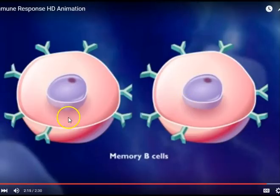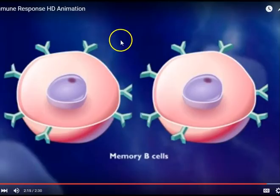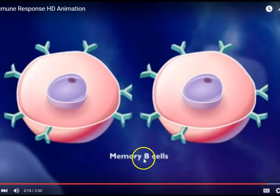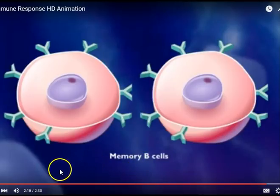To summarize the immune response: make sure you know the difference between an antigen and an antibody. Know all parts of the immune response — the macrophage, helper T-cells, B-cells, memory B-cells, killer T-cells, and the suppressor cell, which slows the immune response down once the infection is under control. These are the key things tested on the diploma exam, so make sure you know them really well before the unit exam.